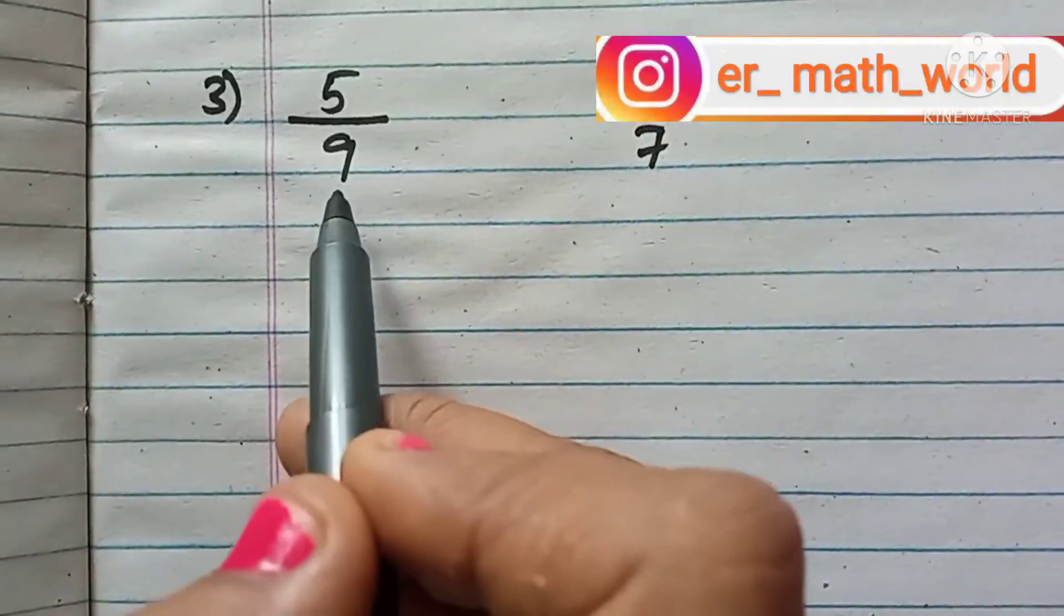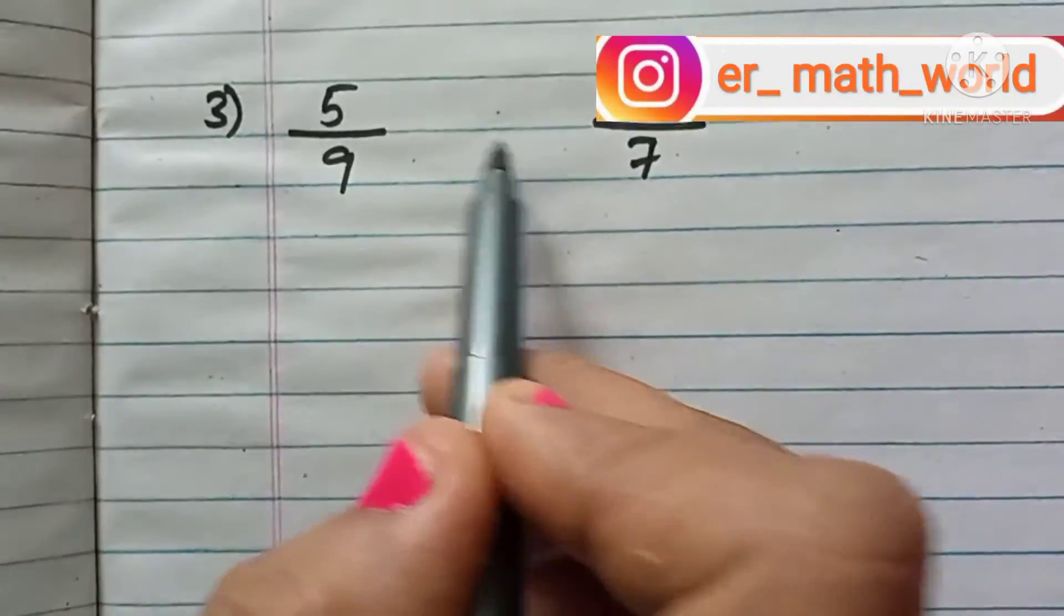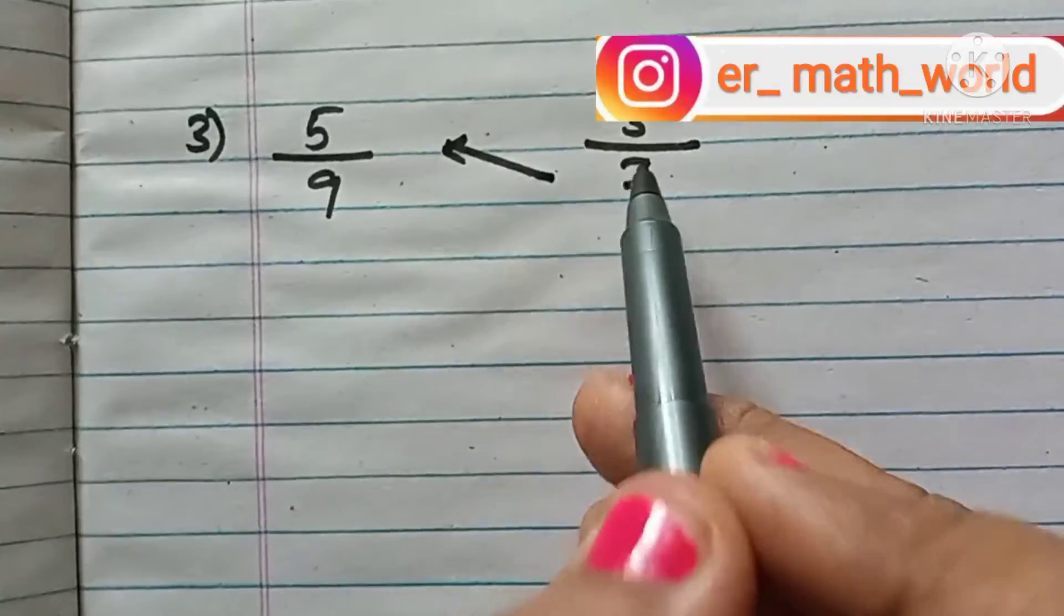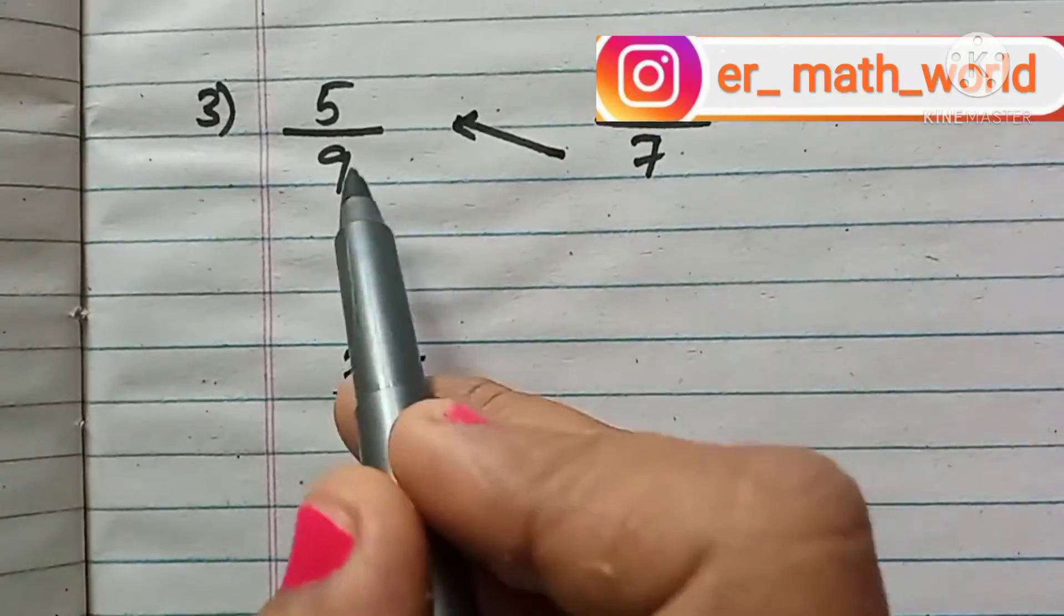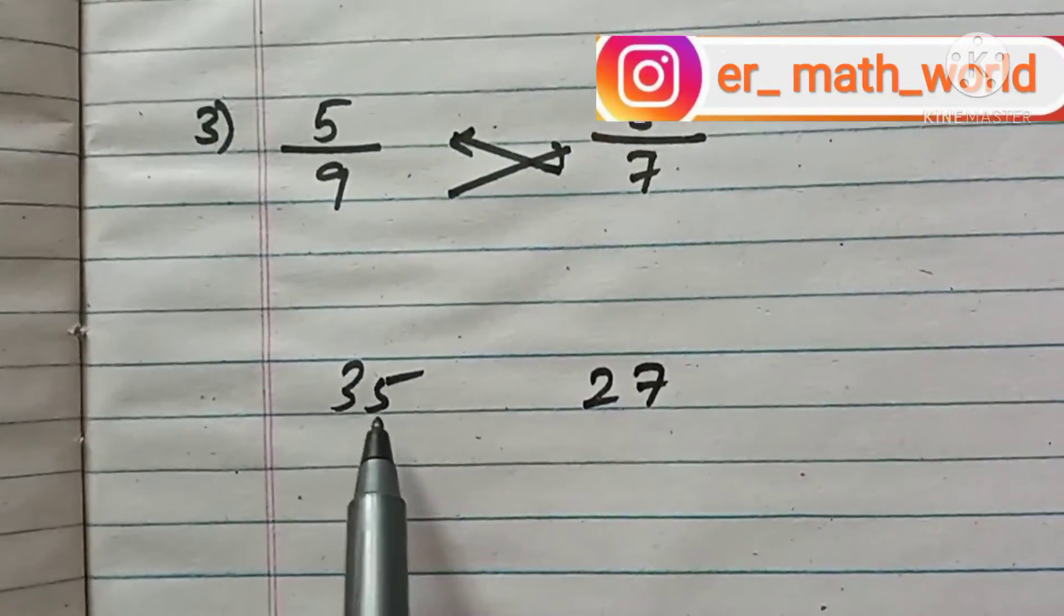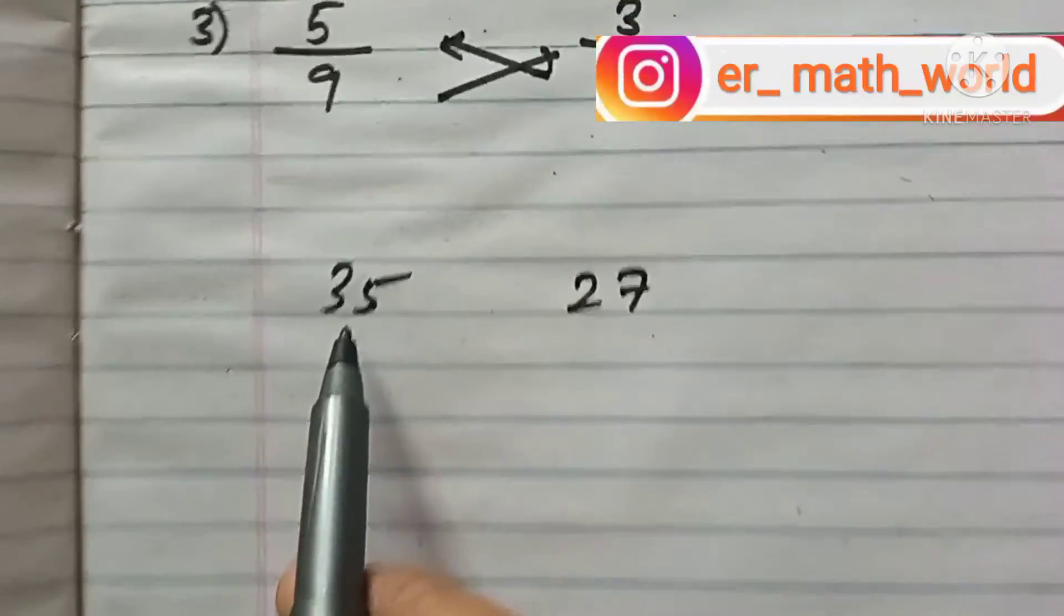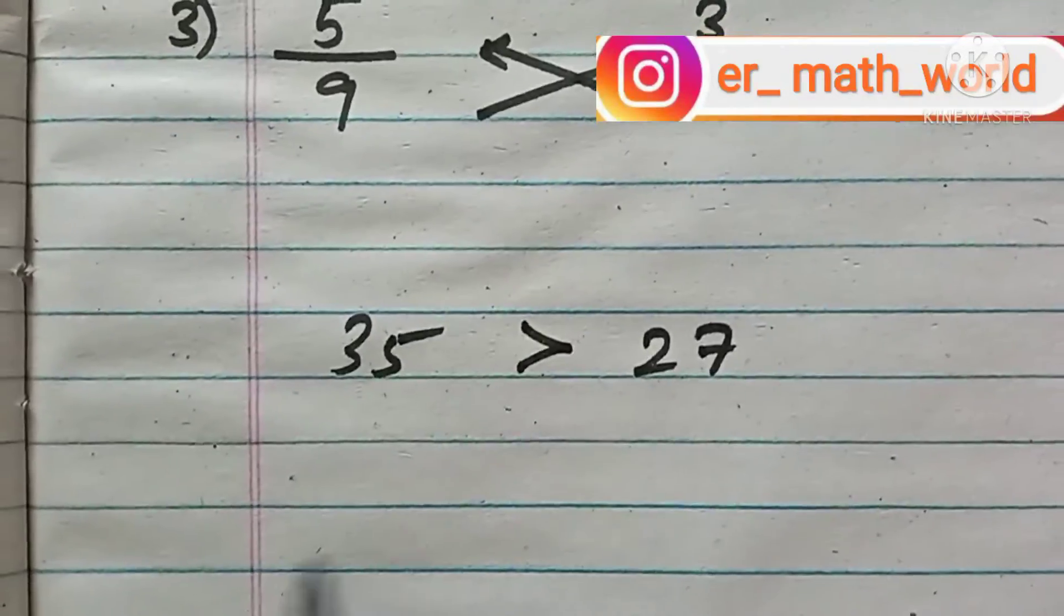We're going to see how to compare them using some symbols. The first symbol is less than, the second one is greater than, and the third one is equal to. By using these symbols today, we are going to see how to compare unlike fractions.